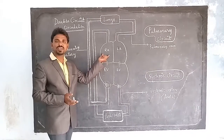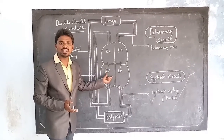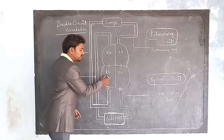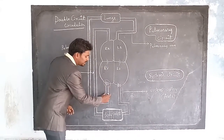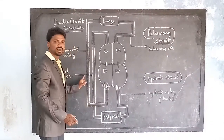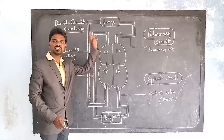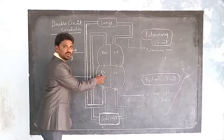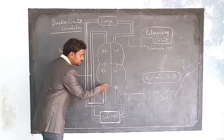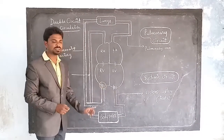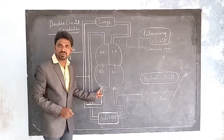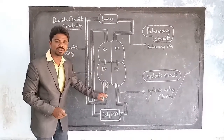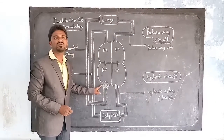Next, the right auricle sends the blood into the right ventricle through the tricuspid valve. Now the right ventricle sends the blood into the pulmonary artery. This is the pulmonary artery because it supplies blood to the lungs. Right ventricle sends the blood into the pulmonary artery through three valves, which are called pulmonary valves.